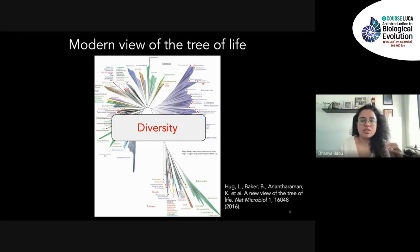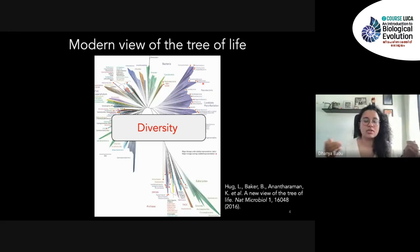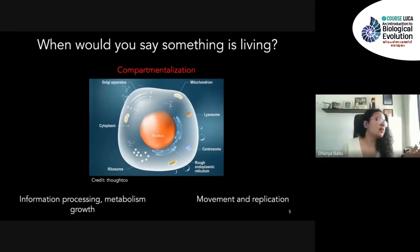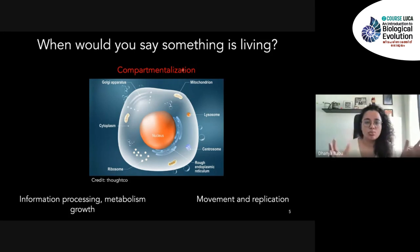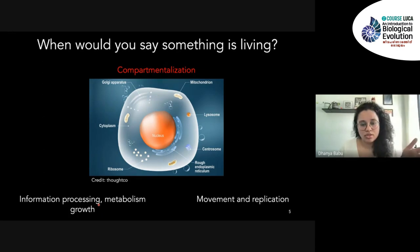We need to start from somewhere, and it's not an exhaustive list of characteristics we want — just simple characteristics that are common throughout this tree of life. Scientists agree we can bring it down to three components: compartmentalization, information processing, metabolism and growth, and movement and replication.